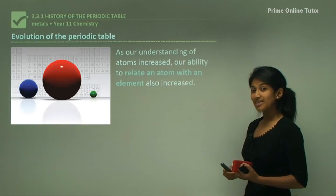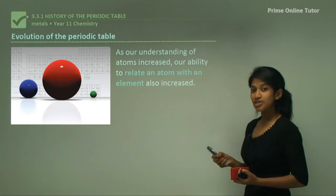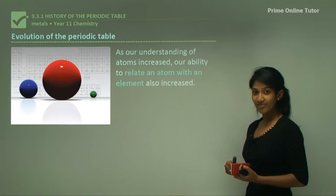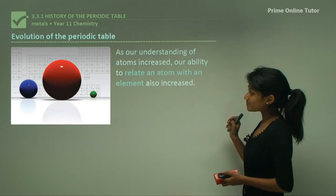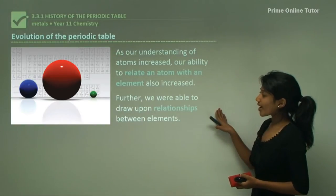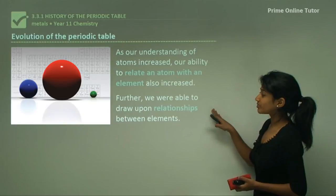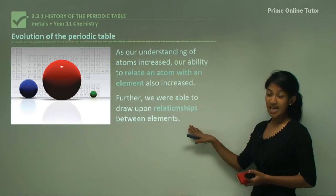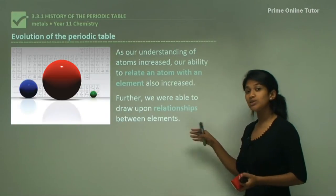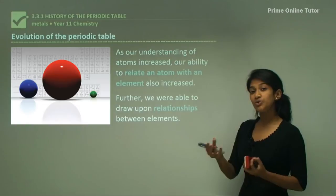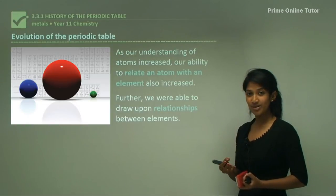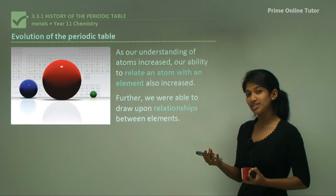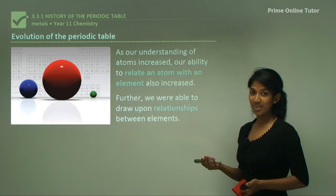So what's an atom? An atom makes up an element — one kind of atom, but lots of it, makes up one element. Further, we were able to draw up relationships between elements, seeing how two different elements had something in common and how two different elements had something in difference.